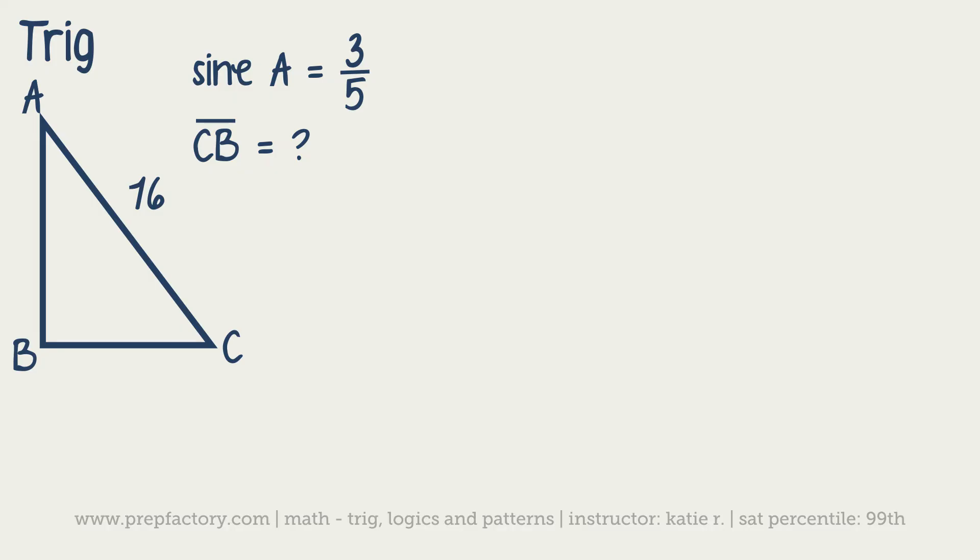You know its hypotenuse is 16. It tells you the sine of angle A is 3 over 5, and it's asking what the length of CB is equal to. This is a good problem because it's not going to actually come out with a whole number because 16 and 5 are not divisible by each other. But that's good because this is something that's nice to get used to. If it tells us that sine of A is equal to 3 over 5, I'm going to go ahead and put that in so we see it.